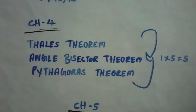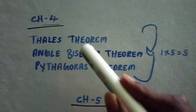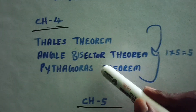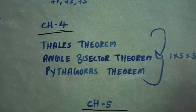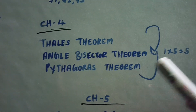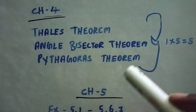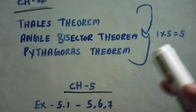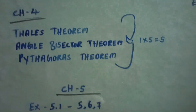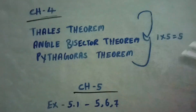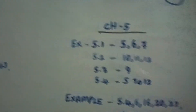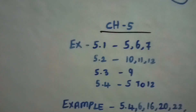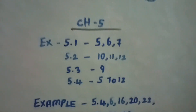In chapter 4, there is Thales theorem and Angle Bisector theorem. You will see Thales theorem and theorem in chapter 5.